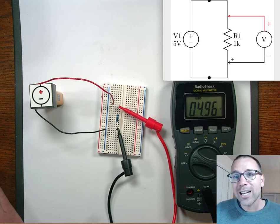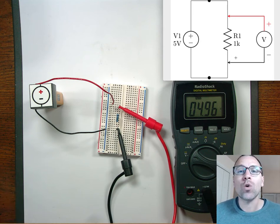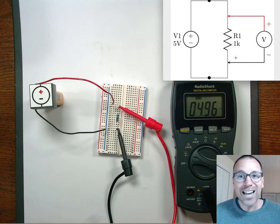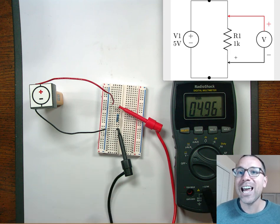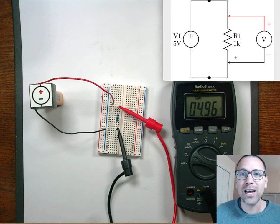In contrast, when we measure current, we're actually going to break connections in the circuit and then set up our multimeter. In this case, we're going to focus on an ammeter in series with the resistor. Let's see what that looks like by transitioning over.